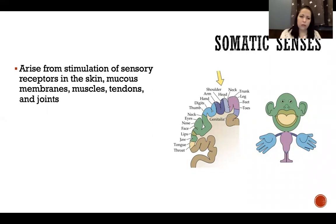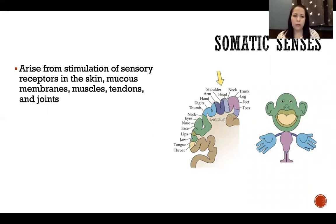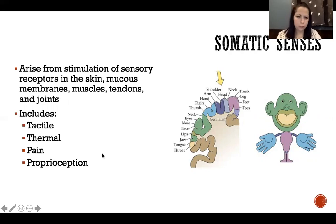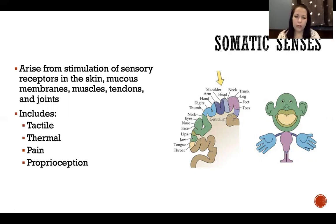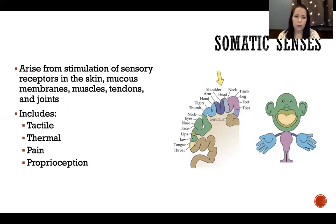Sensory stimulation coming from the skin, mucous membranes, muscles, tendons, and joints. Somatic senses include tactile, thermal, pain, and proprioception. Within each of those we have different types of those senses and different receptors that deliver that information.